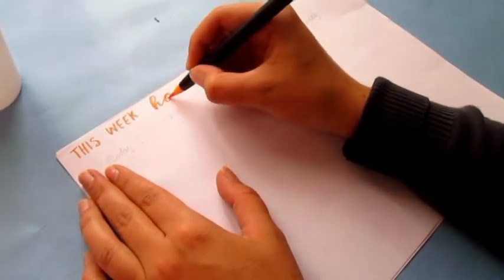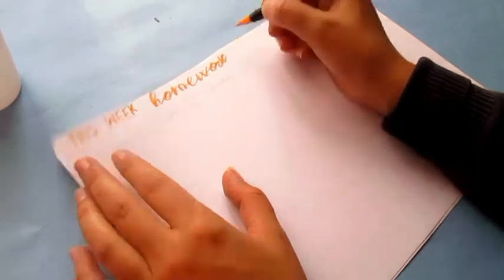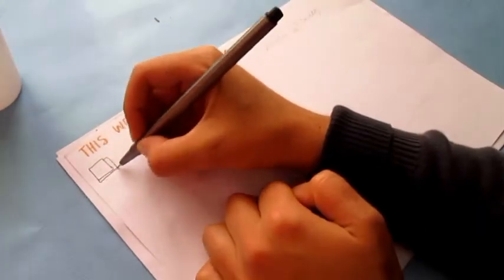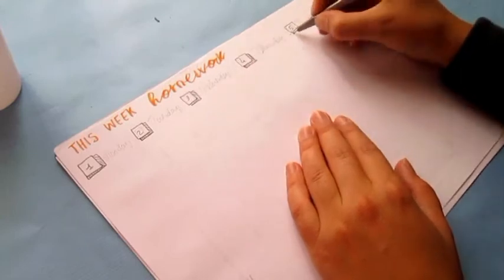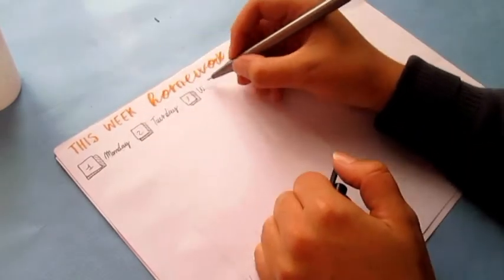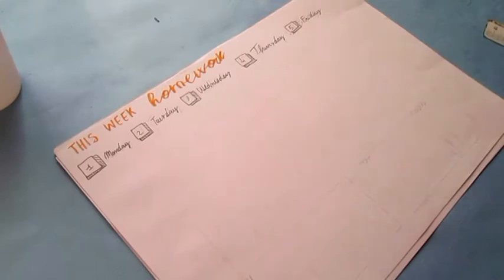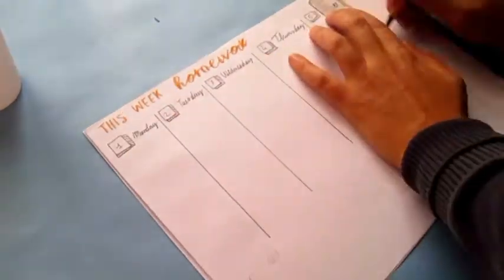Many of you asked me a way to log homework in a bullet journal so I put together this setup which is a vertical setup. I divided the pages in five columns and I wrote on the top the days of the week. The vertical setup is the best for homework because you have enough space to write down everything.